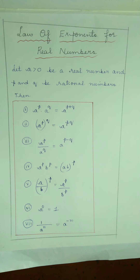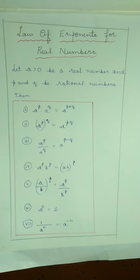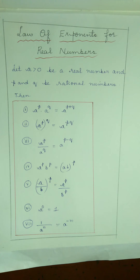In your previous classes, you might have studied the Laws of Exponents, in which a, n and m are natural numbers, and a is called the base and m and n are the exponents. In your earlier classes, you had: a to the power m into a to the power n equal to a to the power m plus n. Then a to the power m whole to the power n is equal to a to the power m into n. a to the power m by a to the power n equal to a to the power m minus n. Then a to the power m into b to the power m equal to ab whole to the power m. Those are the Laws of Exponents you might have studied in your earlier classes.